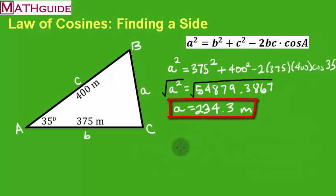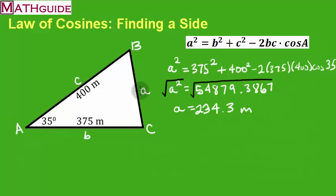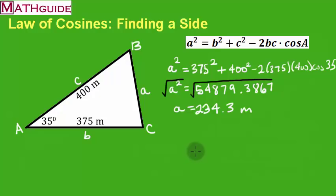That's all there is to using the law of cosines to find a side — it's fairly easy. Since we now know an angle and a side, we would use the law of sines to find either angle B or angle C. Check out our video on using the law of sines to do that; it will show you how to find those other two angles. Make sure you go back to MathGuide.com to check out our interactive quizzes, instructional videos, and lessons.